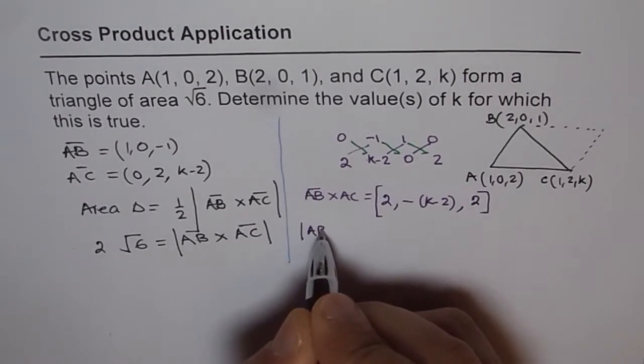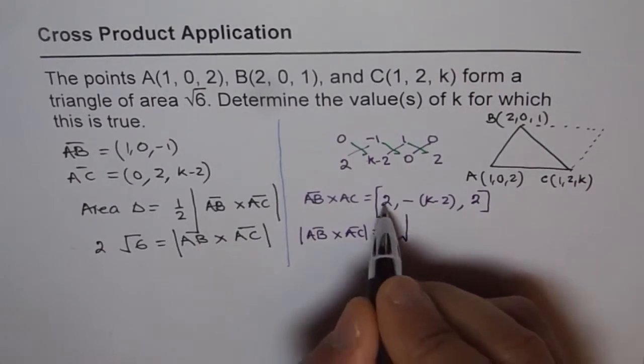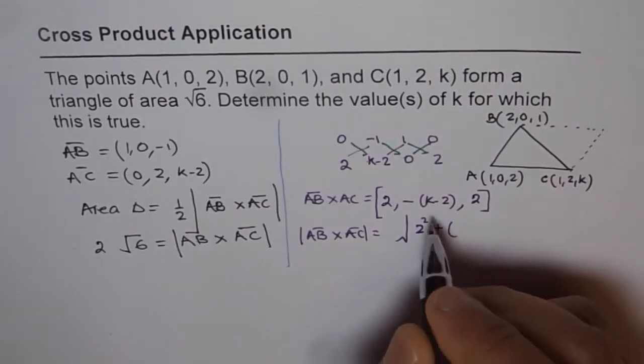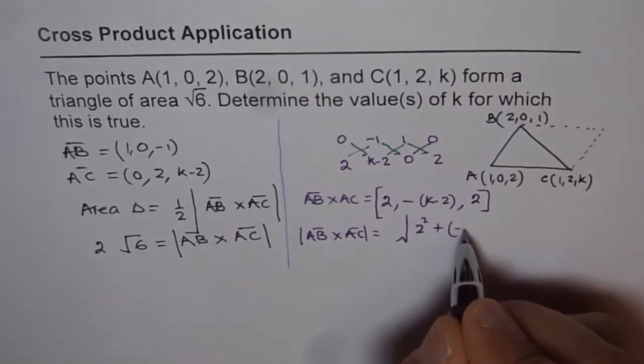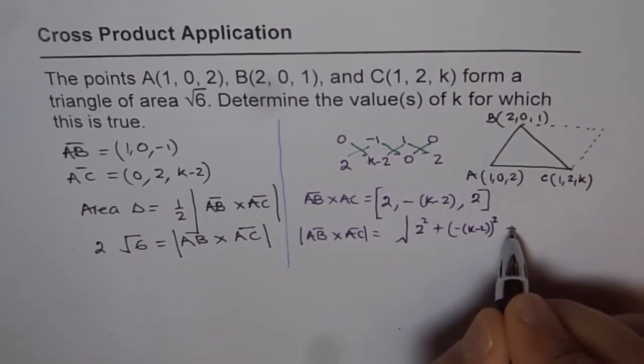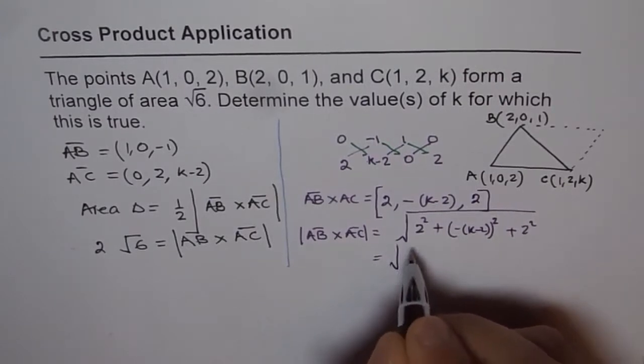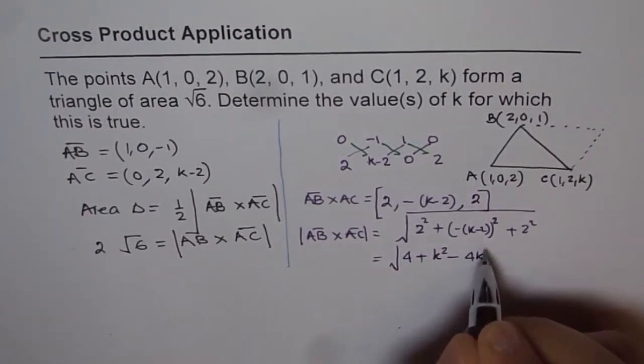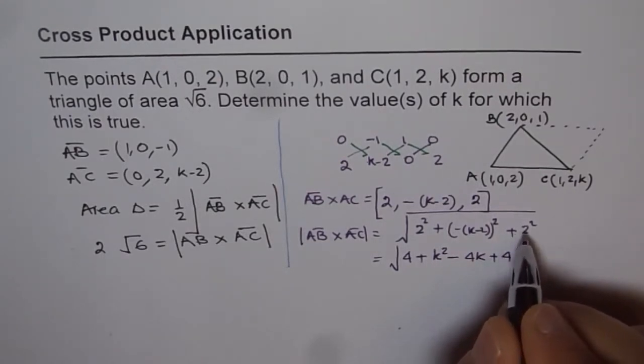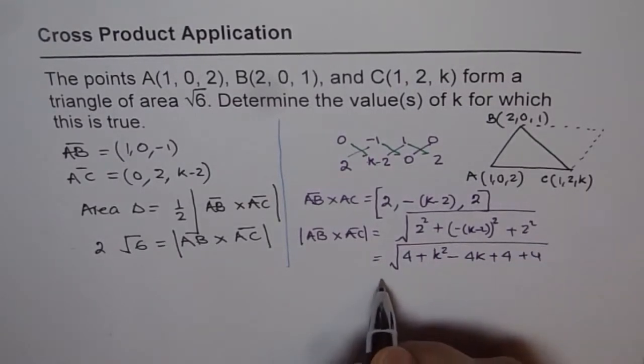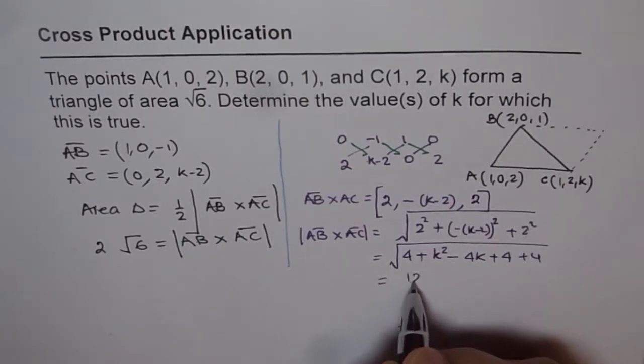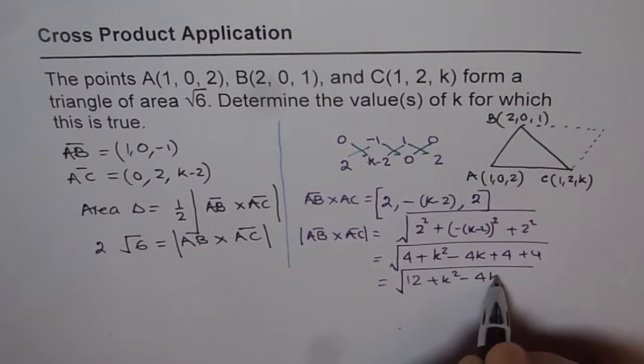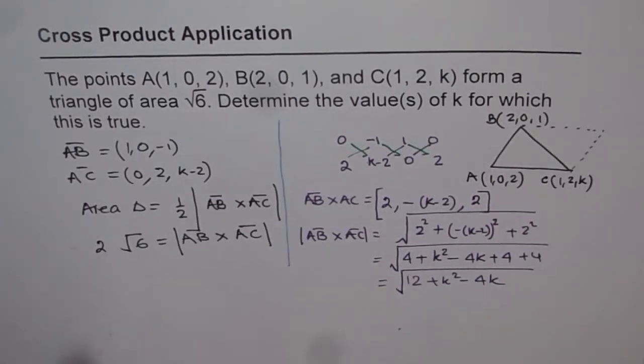The magnitude of AB cross AC is the square root of: (-2) squared, which is 4, plus (-(k-2)) squared, plus 2 squared. Expanding: √(4 + k² - 4k + 4 + 4) = √(k² - 4k + 12). That is the magnitude of AB cross AC, which we can substitute and solve further.